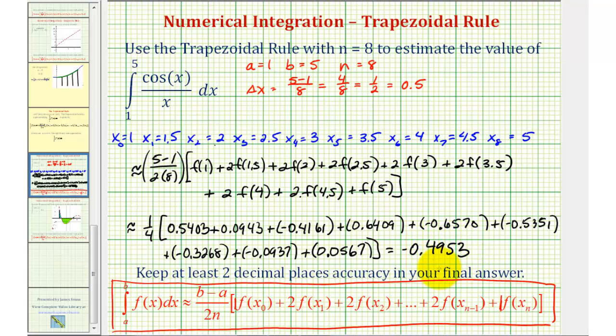So this would be our approximation, or our estimate, for the given definite integral when using the trapezoidal rule with n equals 8. I realize the directions do say keep at least two decimal places for accuracy, but I usually prefer four. I hope you found this explanation helpful.